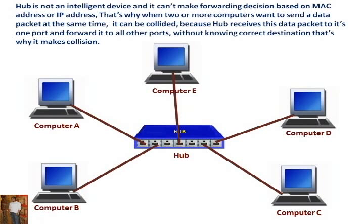Hub is not an intelligent device, and it can't make a forwarding decision based on MAC address or IP address. That's why when two or more computers want to send a data packet at the same time, it can be collided, because the hub receives the data packet on one port and forwards it to all other ports without knowing the correct destination. That's why it makes collision.